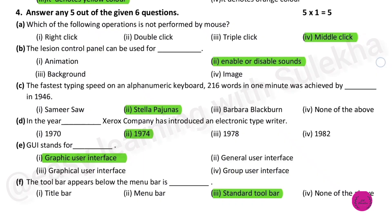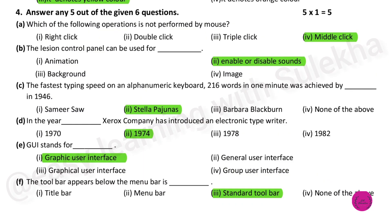The fastest typing speed on a computer alphanumeric keypad, 216 words in one minute, was achieved by blank in 1946, that is Stella Pajunas.